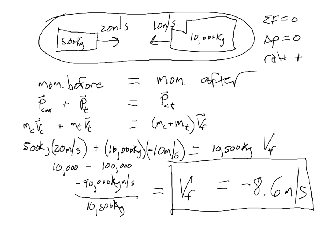So the velocity of the car and the truck together, negative 8.6 meters per second. Since right is defined as positive, that means it's going to the left.